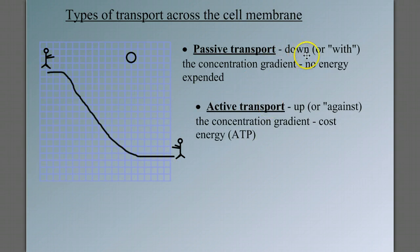Passive transport is transport that goes down or with the concentration gradient. In other words, if we're going down the hill, if we roll this ball, we're not going to have to spend energy to get that ball to go down the hill. It'd be passive. It's going from areas of higher concentration to areas of lower concentration.